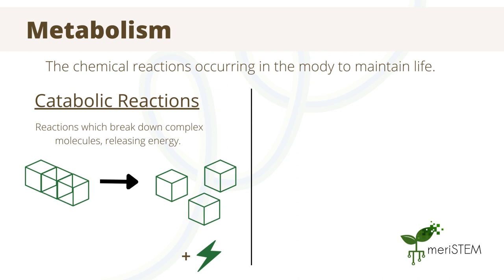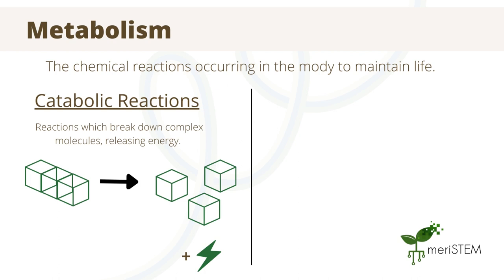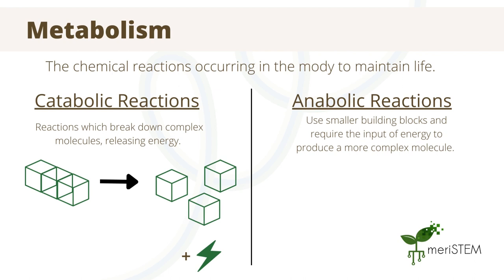The second type of reactions are the anabolic reactions. These use smaller building blocks and require the input of energy to create a more complex molecule. This occurs when carbon dioxide and water are combined in photosynthesis, using light energy to create glucose.